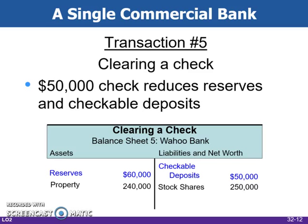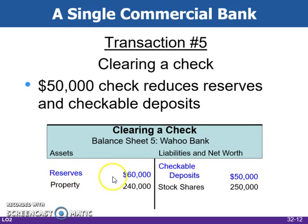In transaction number five, when a customer writes a check against his or her balance, it reduces the reserves and the checkable deposits by the amount of the check. In this example, the customer has written a $50,000 check, so $50,000 is removed from the checkable deposits on the liabilities and net worth side, and $50,000 is removed from the reserves on the assets side. So now the bank has $50,000 in checkable deposits and $60,000 in reserves. Remember, they have to keep 20% of that $50,000 in their reserve account at all times.